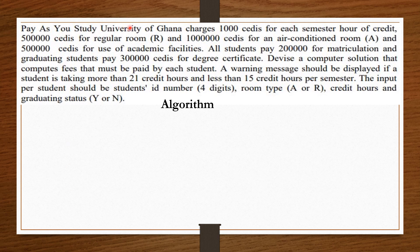Pay As You Study University of Ghana charges 1,000 cedis for each semester hour of credit, 500,000 cedis for a regular room, 1 million cedis for an air-conditioned room, and 500,000 cedis for use of academic facilities. All students pay 200,000 cedis for matriculation, and graduating students pay 300,000 cedis for degree certificates. A warning message should be displayed if a student is taking more than 21 credit hours or less than 15 credit hours per semester.